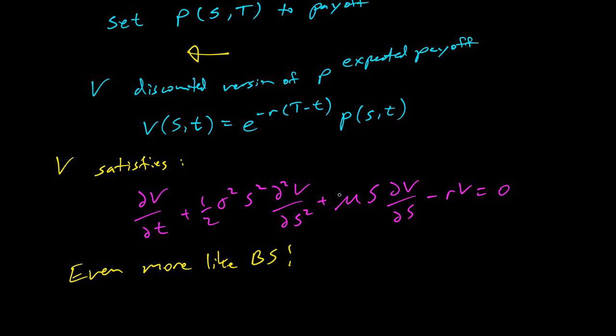So what's different? This is the key difference here. We've got the time, the volatility part second derivative, and then here in Black-Scholes this is r, and here it's mu the drift. That's the only difference.